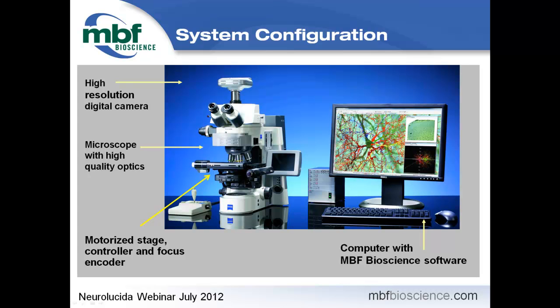Neuralucida is available in a couple of configurations. There's a workstation configuration where you run it on acquired images — you move images from your microscope system to the computer, then trace them. There's another version that includes microscope control, where you trace directly on a bright-field microscope, looking at perhaps a Golgi-stained slide, and the computer digitizes the structure.